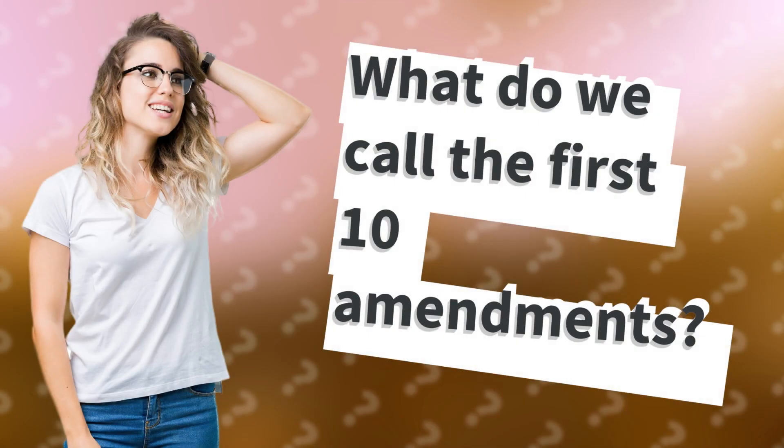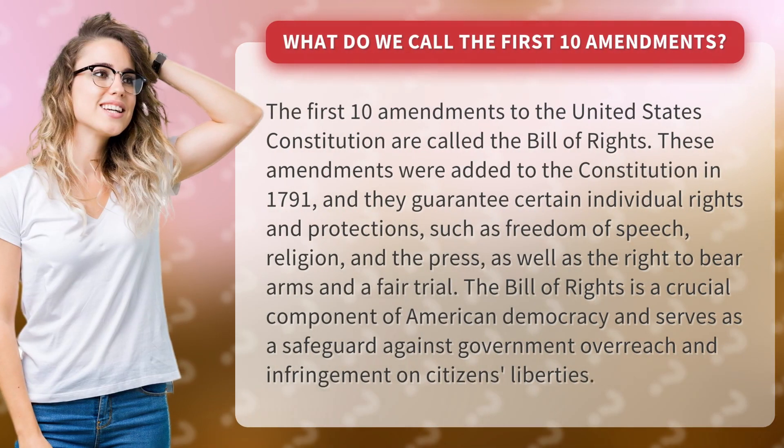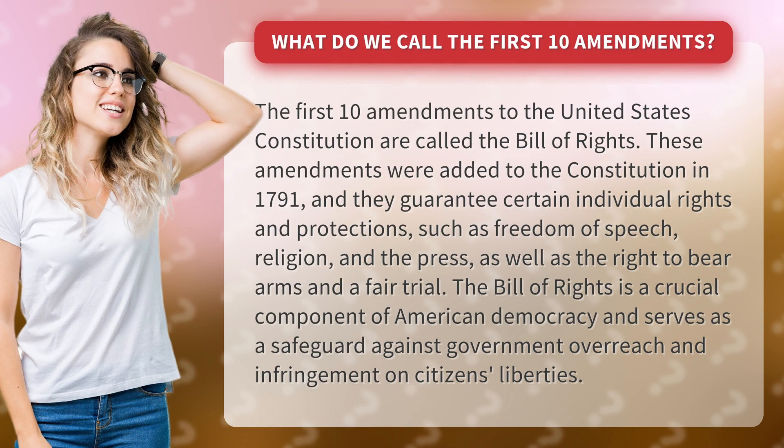What do we call the first 10 amendments? The first 10 amendments to the United States Constitution are called the Bill of Rights. These amendments were added to the Constitution in 1791, and they guarantee certain individual rights and protections.